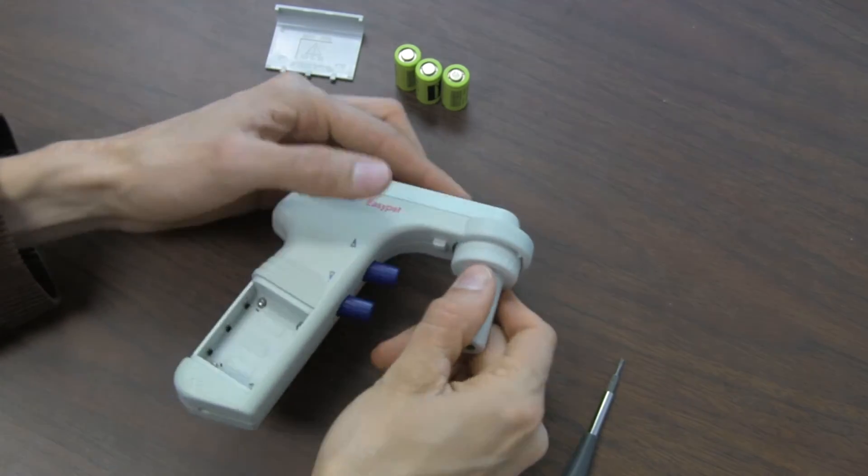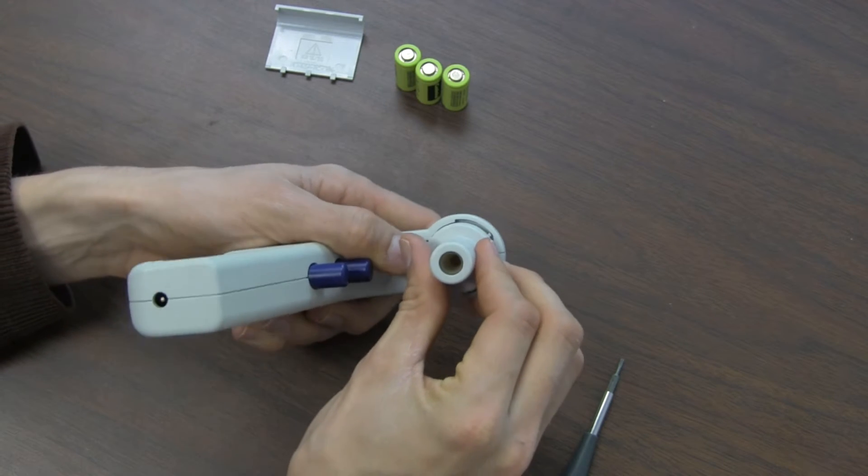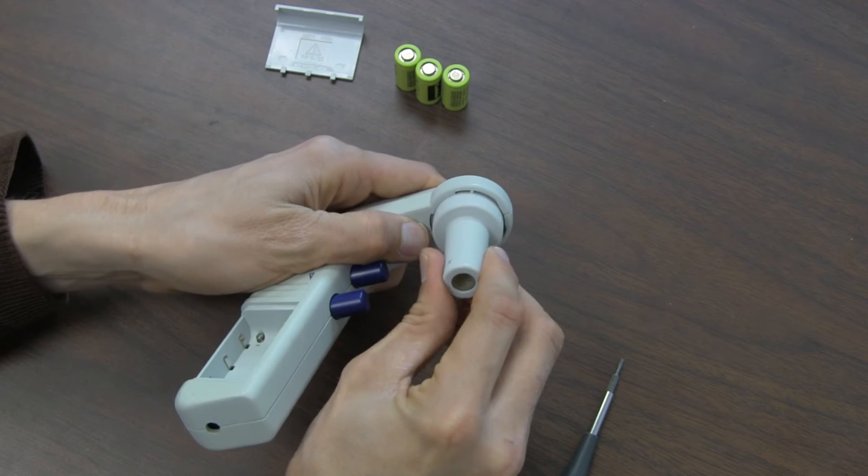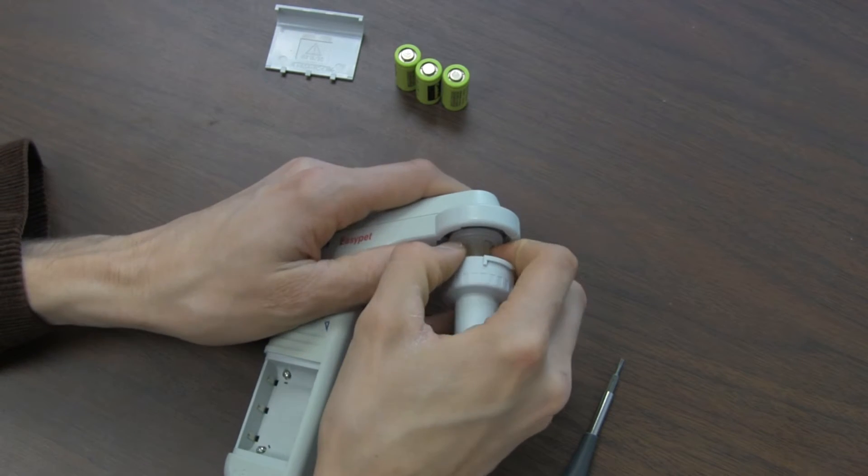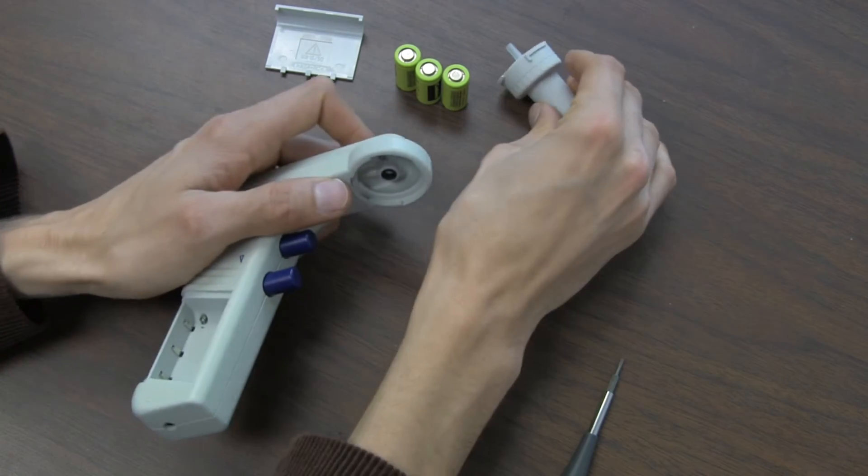And these are not the only screws that need to be removed. There's also some under the head here. So to remove the nozzle, you push down this button right here and then turn counter-clockwise and pull out the nozzle. Set that aside.